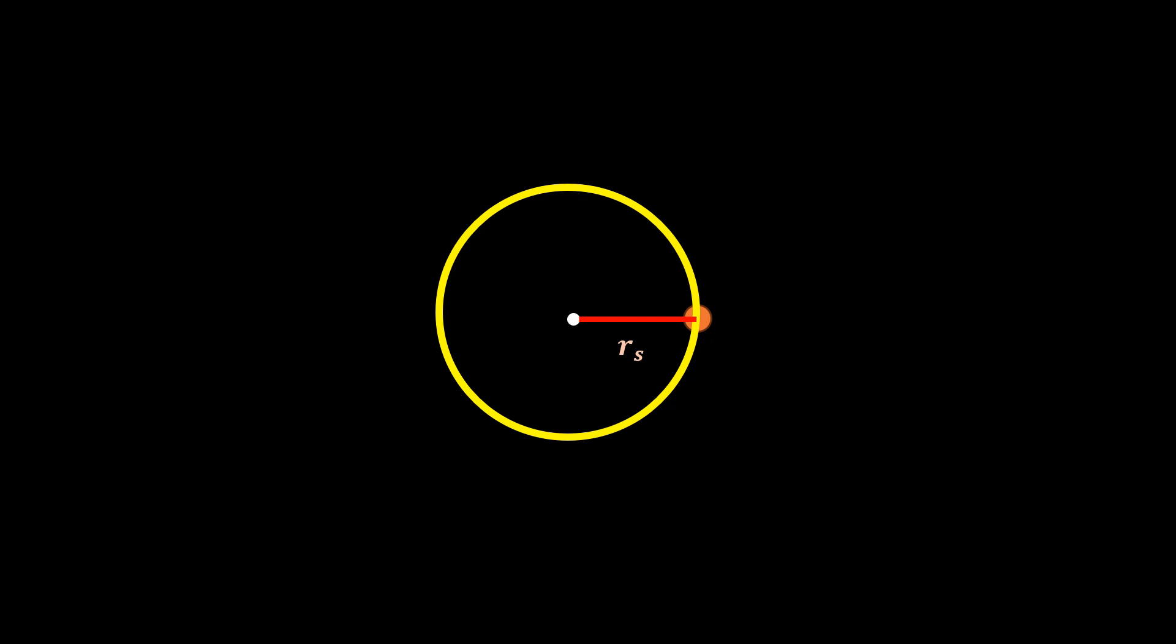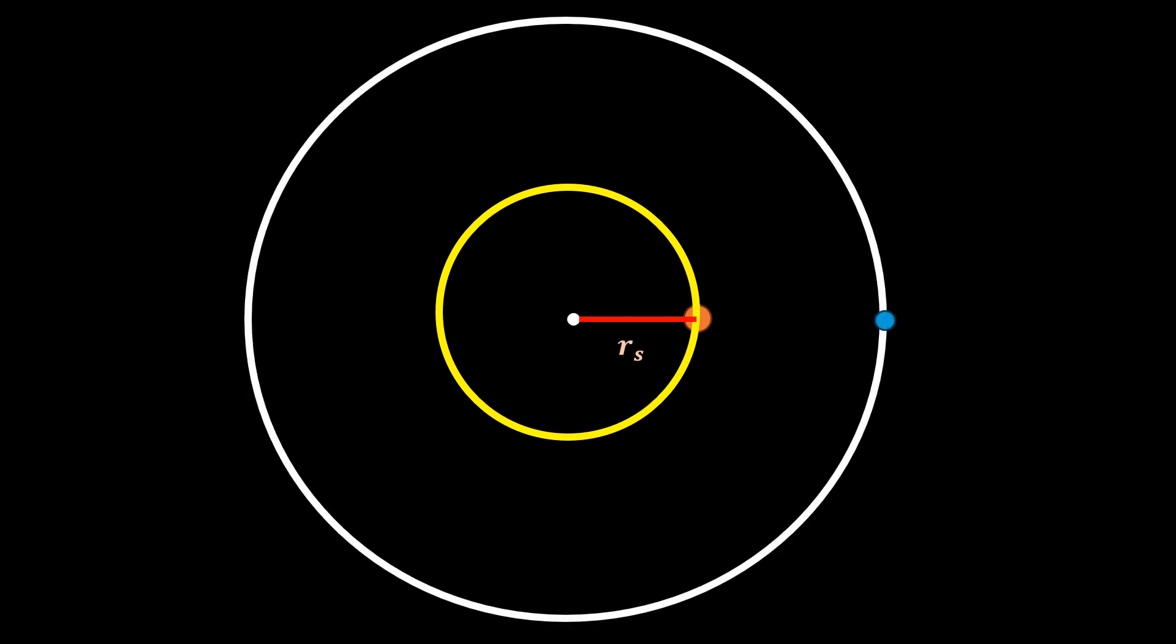The orbit of a planet orbiting this star is therefore as shown. I have exaggerated the size of the star's orbit for clarity purposes, so don't pay too much attention to the ratio of the orbits.